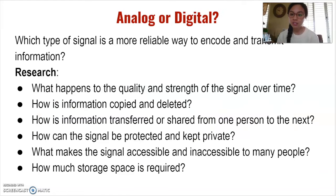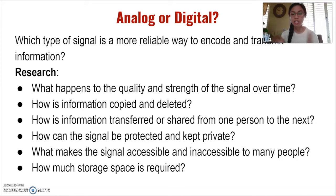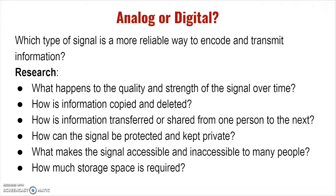Now that we've learned about signals, the different types of signals, and gone over five examples of analog versus digital signals, it's time to dive deeper and conduct some research to evaluate which type of signal is a more reliable way to encode and transmit information. Research questions include: What happens to the quality and strength of a signal over time? How is information copied and deleted? How is information transferred or shared from one person to the next? How can a signal be protected and kept private? What makes a signal accessible or inaccessible to many people? And how much storage space is required for each type of signal?